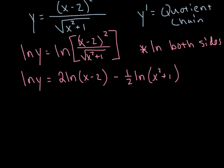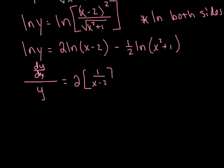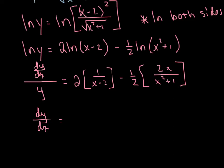Now I'm actually ready to derive, and this is actually an implicit problem. As I derive the left side, it's going to be dy/dx all over y, equals 2 times du over u minus one half times du over u. Now the last thing I need to do is isolate dy/dx — I'm going to multiply both sides by y.